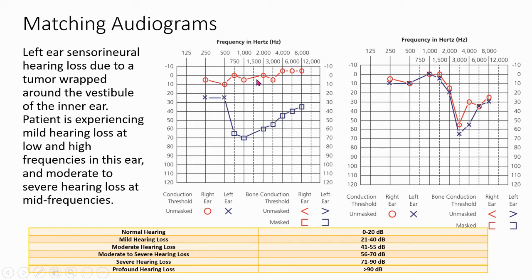Whereas this patient, remember red line is for right ear, blue line is for left ear, the right ear has normal hearing. It's within our normal hearing thresholds of 0 to 20 decibels, which we see down here in our chart.